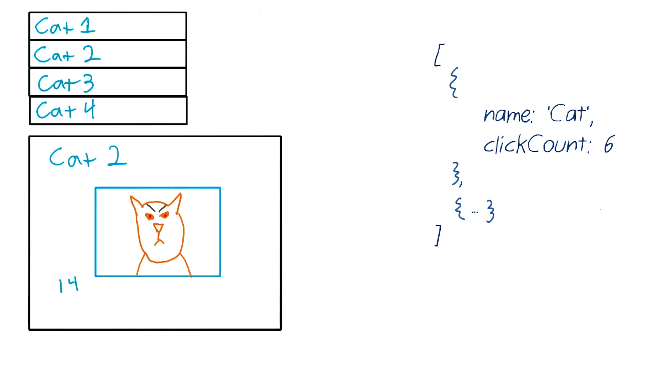Now let's review the model and view in a bit more detail. The model is going to be super simple. It's just our data, an array of cat objects, with properties for name, click count, and image URL. Nothing new here.